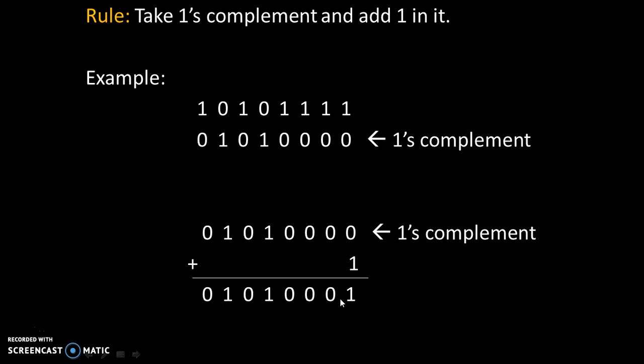So, 0 plus 1 is 1 and rest of the digits will remain same. So this will be the new addition. And 1's complement plus 1 will give us 2's complement of the binary number.